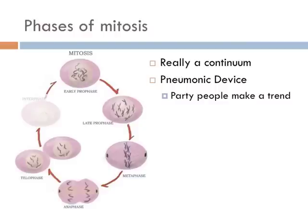If you watch the entire process of mitosis, the phases are really a continuum — one phase runs into another, really without any distinct breaks. A lot of students get these phases mixed up, so I came up with a handy mnemonic device to help keep them straight: Party People Make a Trend. Party People stands for the first two stages of mitosis — prophase and pro-metaphase. You may also see these phases as early and late metaphase, and they mean basically the same thing.